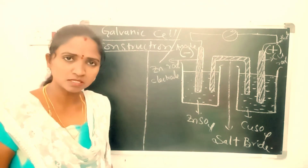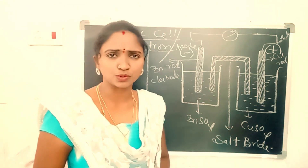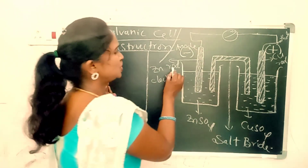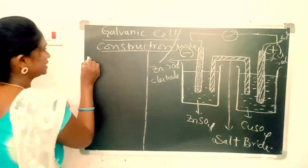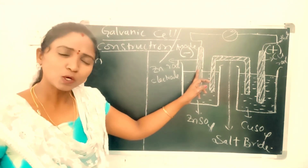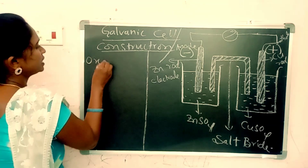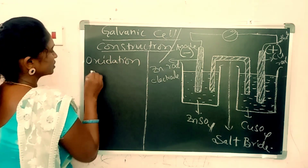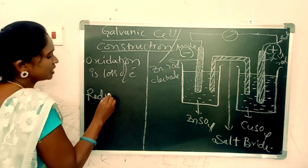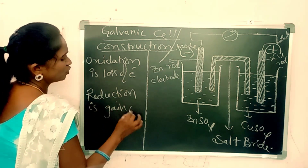Now let's see how this cell works and how it produces electricity. The zinc rod undergoes oxidation by loss of electrons. Oxidation is called as loss of electrons; reduction is called as gain of electrons.